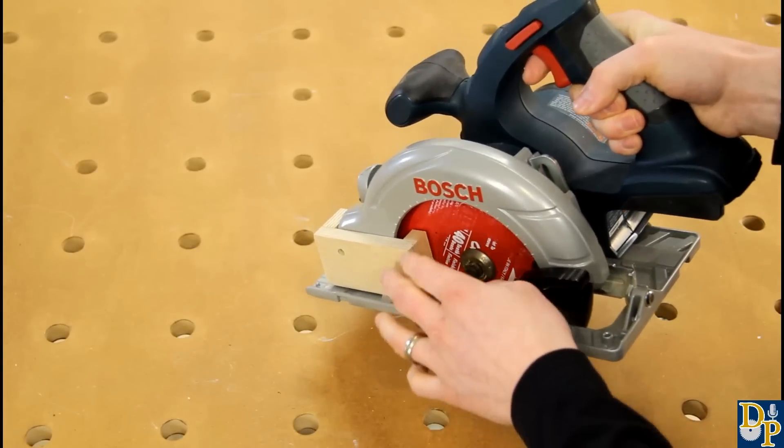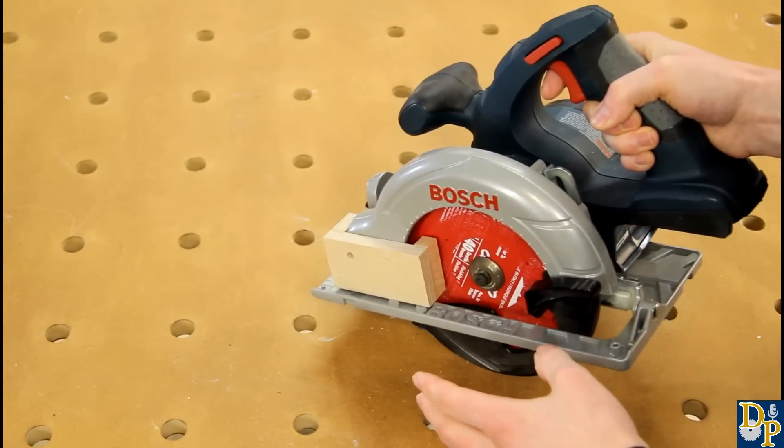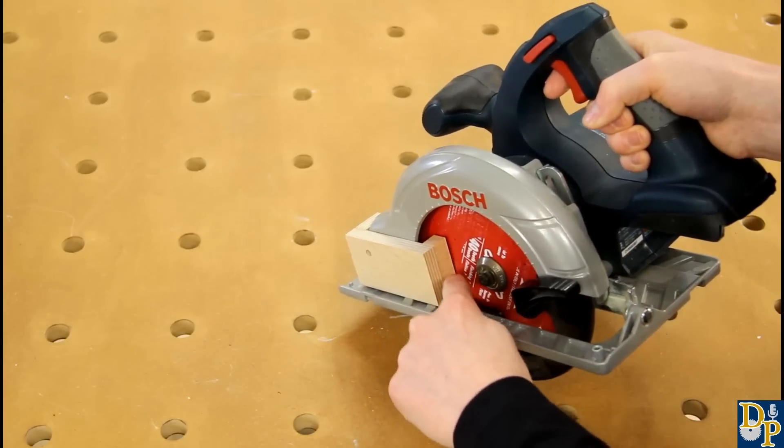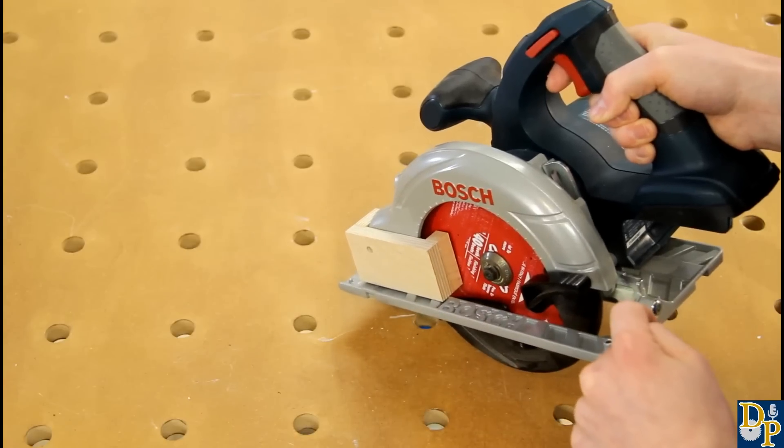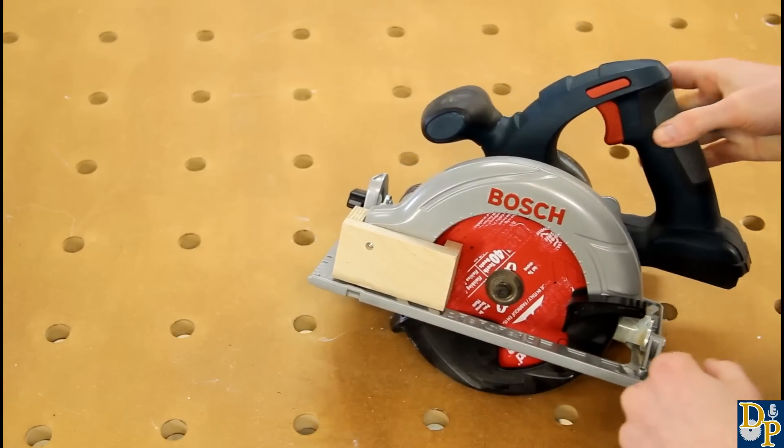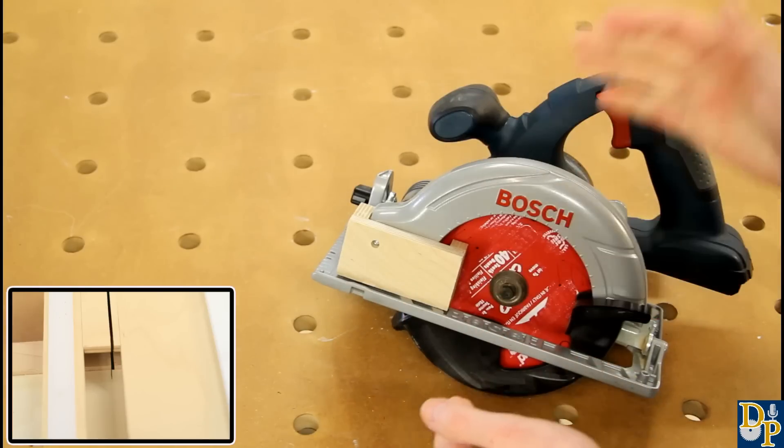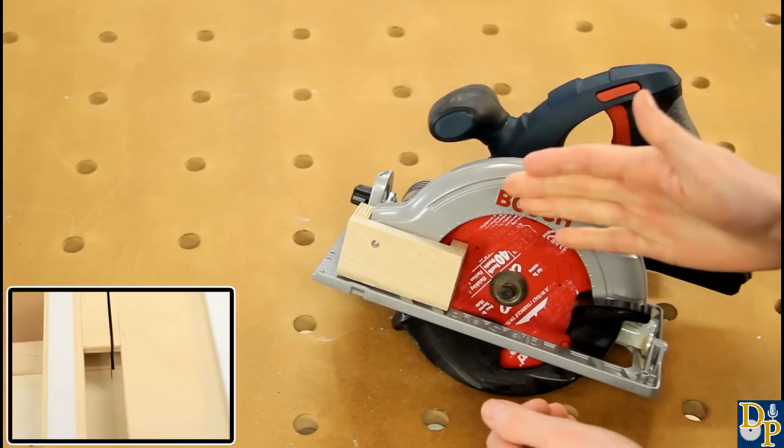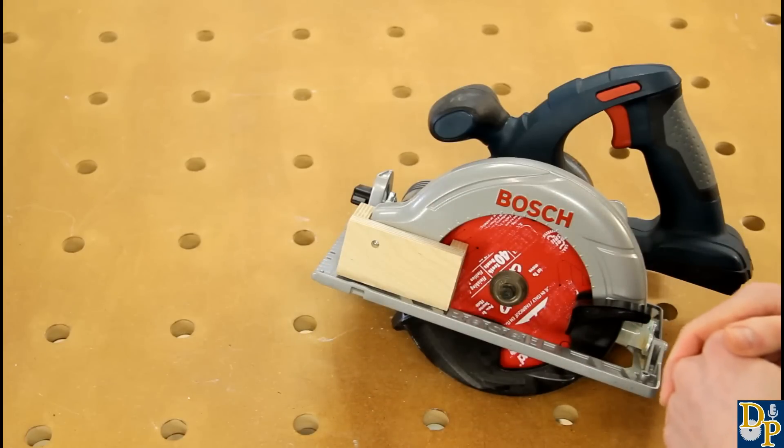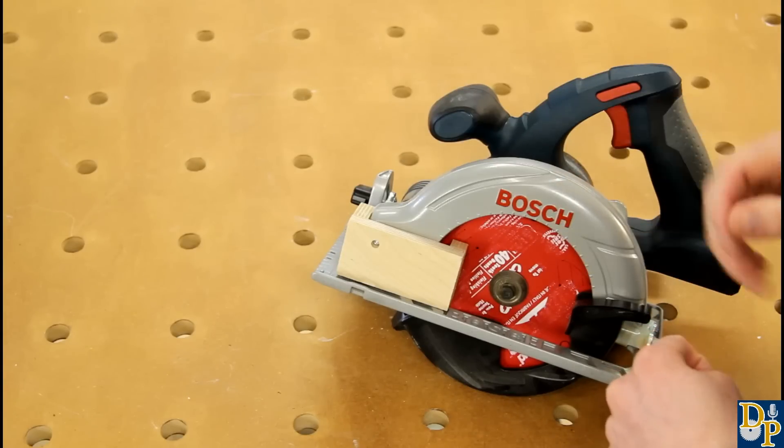Now you can't really use this dust collection attachment if you're doing freehand cuts like you'd normally do with a circular saw since it does obscure your view of your cut line. But in this case with the crosscut jig that doesn't matter because your cut mark is lined up with the kerf in the fence and you make your cut so it's dead on every time. So this dust collection attachment is really specifically designed for the crosscut jig to make it dustless.